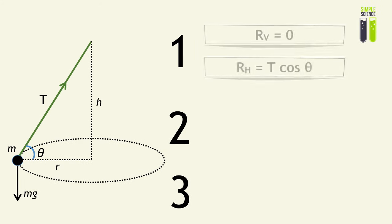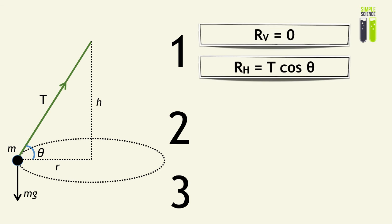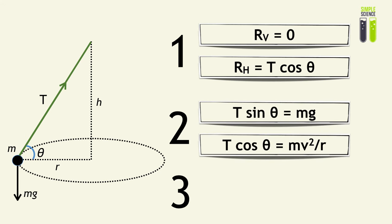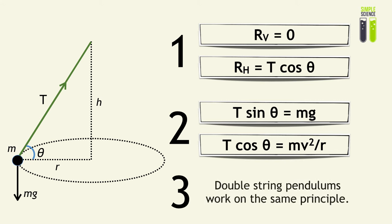Here is a quick summary of the basic principles when dealing with conical pendulums. First, the vertical component of the resultant force is zero — there is no vertical displacement. The horizontal component of the resultant force equals T cos θ, which is also the centripetal force. So resolving vertically gives T sin θ = mg, and resolving horizontally gives T cos θ = mv²/r. Double string pendulums work on the same principle — just resolve vertically and horizontally.